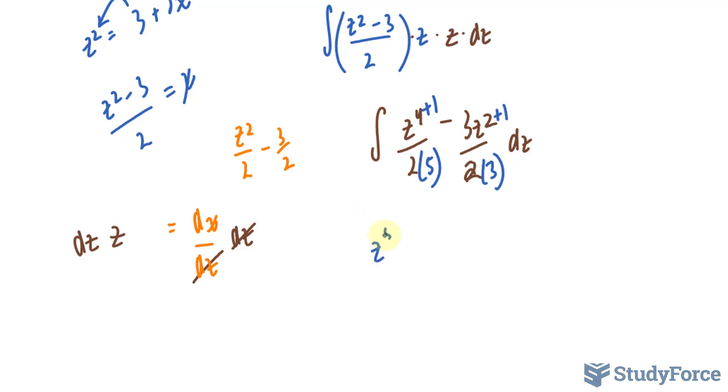And we're practically done, but we still have one major step. Right now we have z to the power of 5 over 10 minus 3 over 6, which is half, so we have z to the power of 3 over 2. And we have to introduce the arbitrary constant, c.